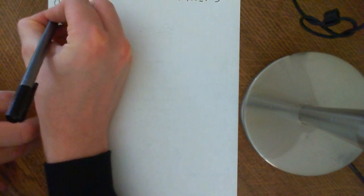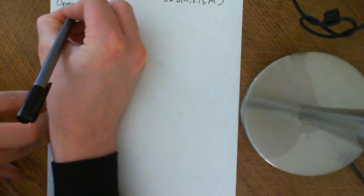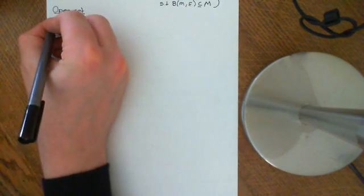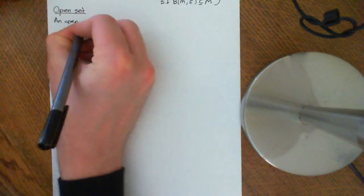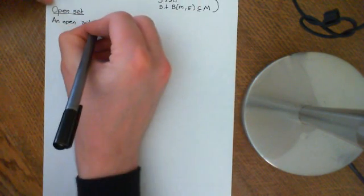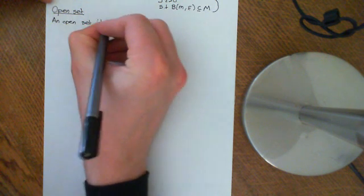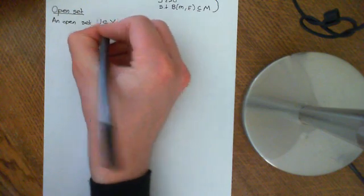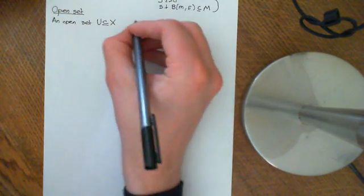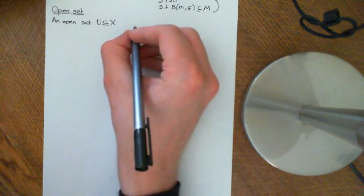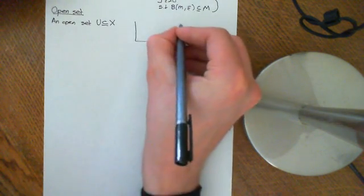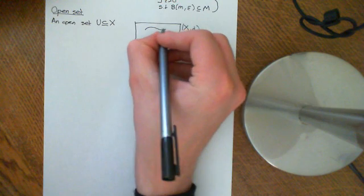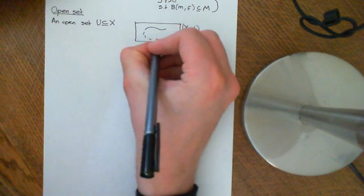Firstly we'll start with the definition of an open set. An open set — we'll call it U — which is a subset of our metric space X; it doesn't necessarily need to be a proper subset, it could be the whole space. Here is our metric space X, and it also has a distance function defined on it, and now we have some sets. Open sets are always drawn with dashed lines, so this is the open set U.